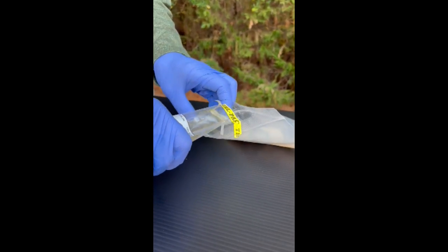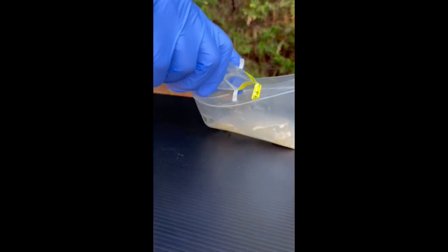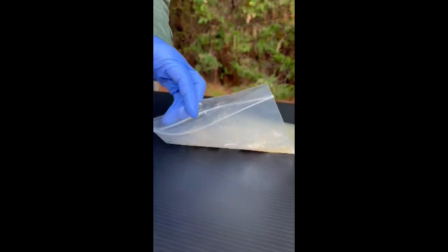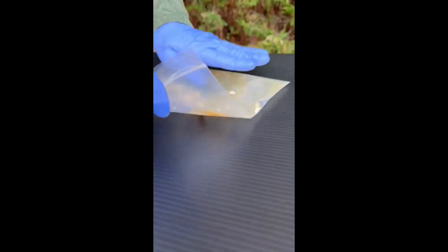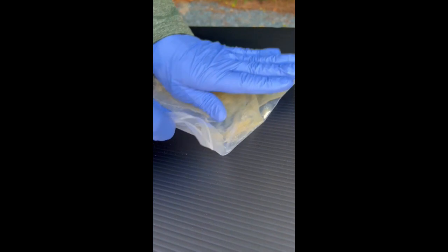Quickly pour the entire sample from the thio bag into the gel bag, but do not seal the bag shut yet. Immediately, lay the gel bag on a flat surface.